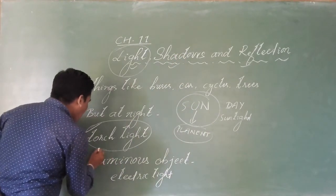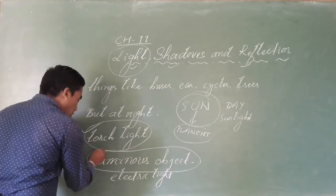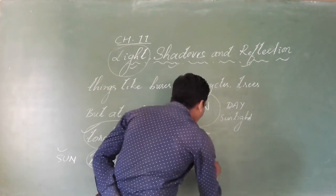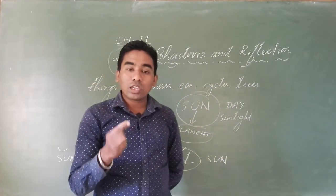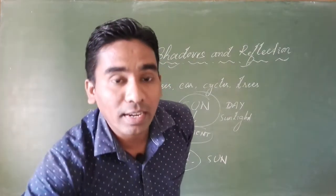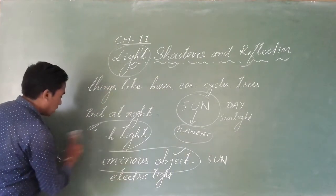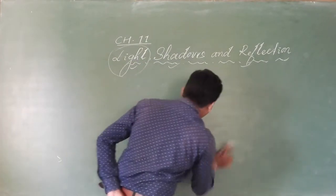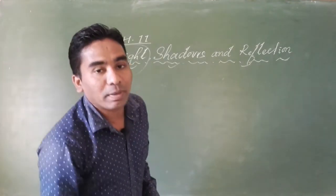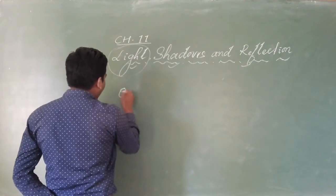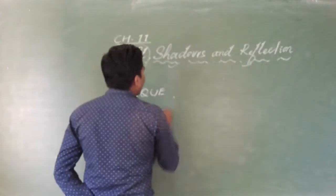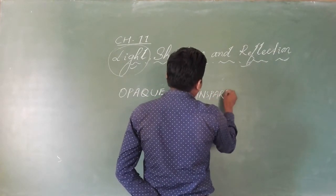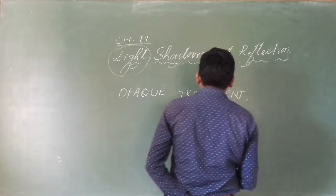The objects which provide their own light — the objects which give their own light — are known as luminous objects. The sun is a luminous object because the sun gives us its own light. According to the properties of light, objects can be categorized into three types: first one is opaque, next one is transparent, and third one is translucent.